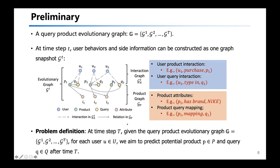Given this definition, the temporal event forecasting can be formally defined as follows. At time step t, given the query-product evolutionary graph, for each user in the user set, we aim to predict the potential product and query after time step t, which can match the user's intents in the future.